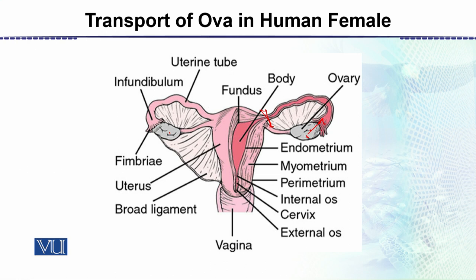The egg is released and the fimbria — which are finger-like structures — attract or catch this egg. It then passes through the infundibulum into the uterine tube, and from there it moves through the uterine cavity.